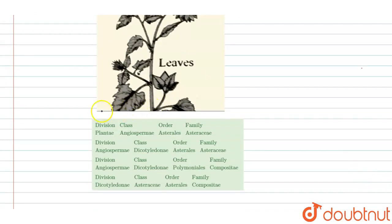The options given are: first is Division Plantae, Class Angiospermae, Order Asterales, Family Asteraceae. Second option is Division Angiospermae, Class Dicotyledonae, Order Asterales, Family Asteraceae. Third option is Division Angiospermae, Class Dicotyledonae, Order Polymoniales, Family Compositae. Fourth option is Division Dicotyledonae, Class Asteraceae, Order Asterales, and the Family is Compositae.